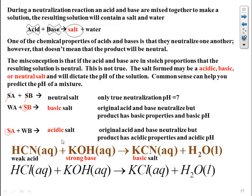Let's look at HCl and KOH: a strong acid and a strong base. What do we predict the salt to be? Since we have a strong acid and a strong base, they neutralize each other and we expect a neutral salt. Is potassium one of the neutral cations? Yes. Is chloride one of the neutral anions? Yes. Neutral cation and neutral anion — we form a neutral salt, confirming our prediction.